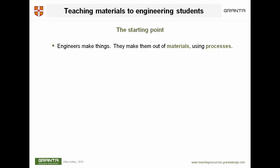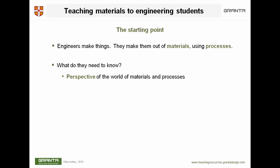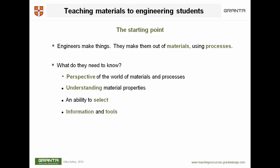So why do we teach materials to engineering students? Engineers make things and they make them out of materials, and to do this they use processes. First they need a perspective of the world of materials and of processes — what materials are available, what processes, and what are their characteristics. They need to understand material properties, where they come from, and an ability to select materials. One of the databases has 4,000 materials in it, meaning you need methods and tools to deal with this data systematically.